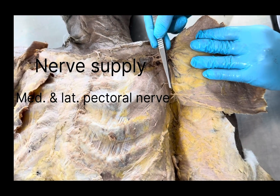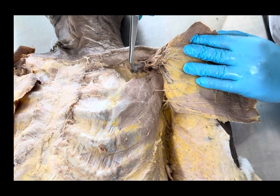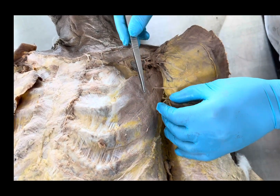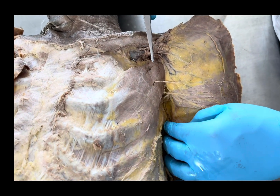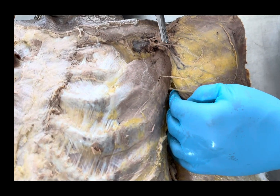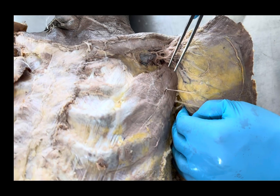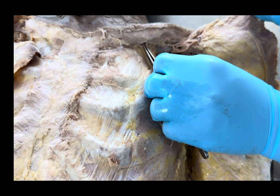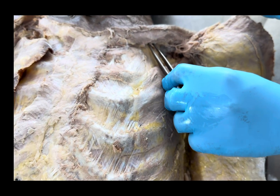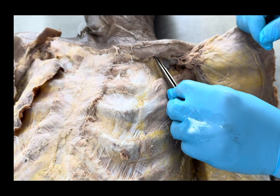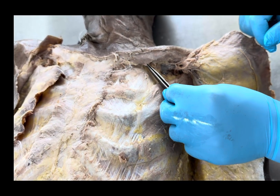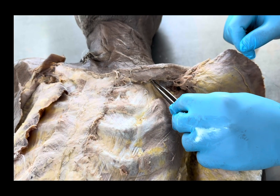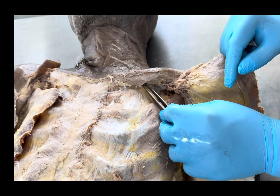Pectoralis minor is supplied by the medial and lateral pectoral nerves. Its action is to help the serratus anterior to protract the scapula. The third muscle, deeper inside, is the subclavius muscle. It takes origin from the first rib and is inserted into the subclavian groove of the clavicle. Its action is to stabilize the clavicle.